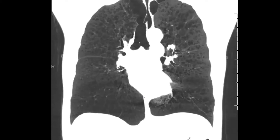When you see basal predominant panlobular emphysema, it does have a differential diagnosis clinically. The most common cause is alpha-1 antitrypsin deficiency, which most of you know. But there are other causes — one of the first we think about is IV talcosis, which can cause basal predominant panlobular emphysema looking essentially exactly the same as alpha-1 antitrypsin deficiency.